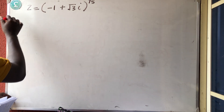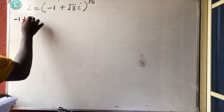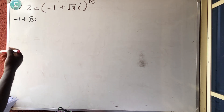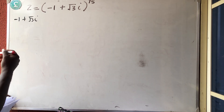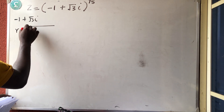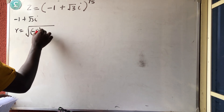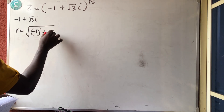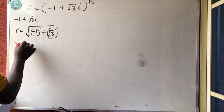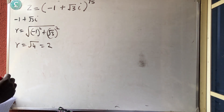First of all, I have that minus 1 plus root 3i, so z is equal to this. Which means that my R is equal to the square root of (minus 1) squared plus (root 3) squared. So R is equal to the square root of 4, which is equal to 2.